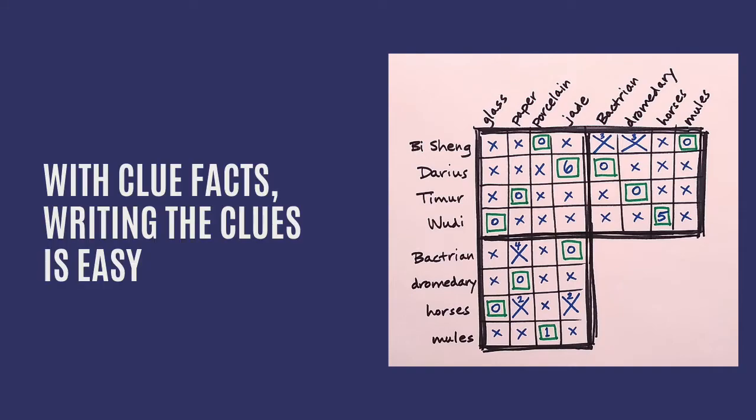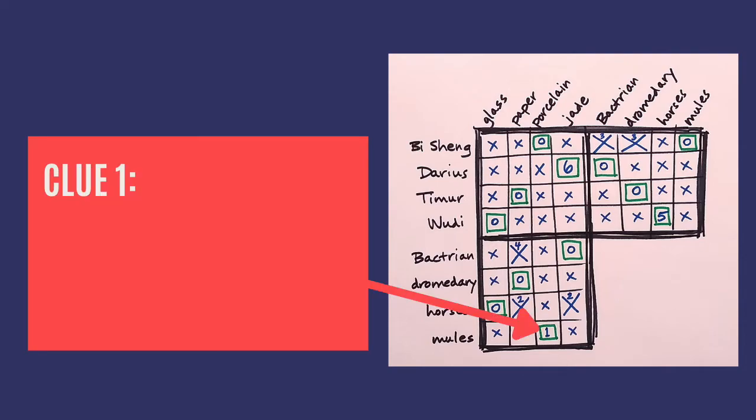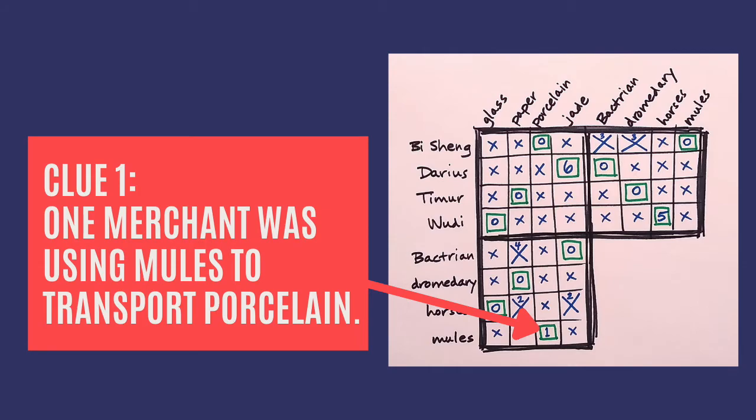Once you've determined which facts the clues need to convey, writing the clues is easy. That's the big advantage of using clue facts to create your puzzles. What will we write for clue one? We want the solver to make an O for porcelain and mules. A clue that works could be: one merchant was using mules to transport porcelain. Clue two.